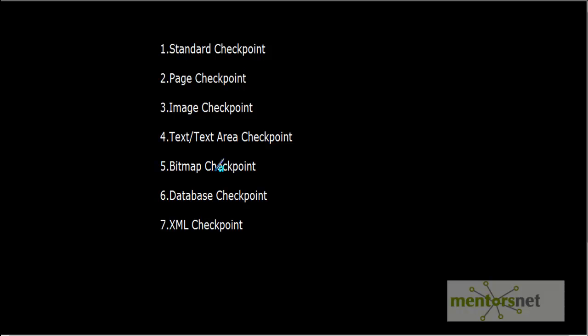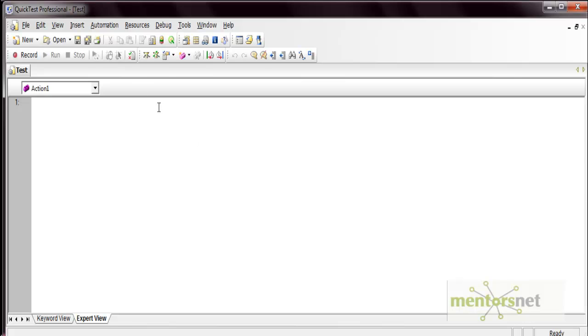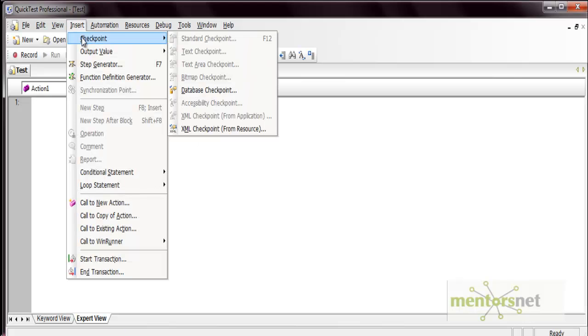The bitmap checkpoint allows a pixel-to-pixel comparison of a whole page. The database checkpoint can verify database data such as data in a table, number of rows, and number of columns - we will cover this in later videos. The XML checkpoint can verify the XML schema and XML data. In QTP, the checkpoint option is available under the Insert menu, where all available checkpoints are listed.